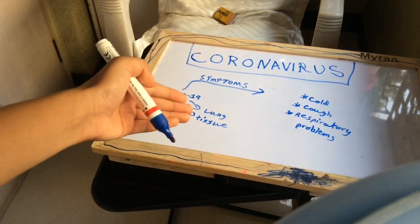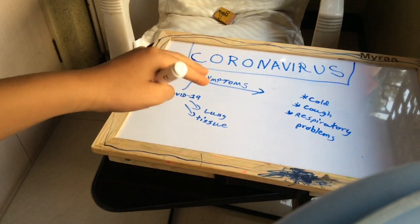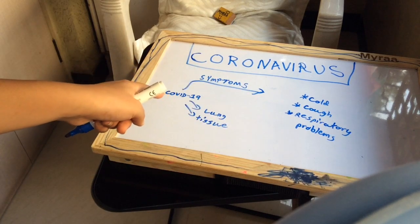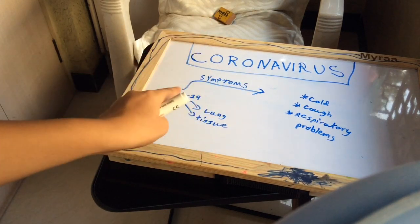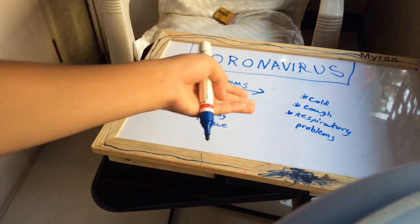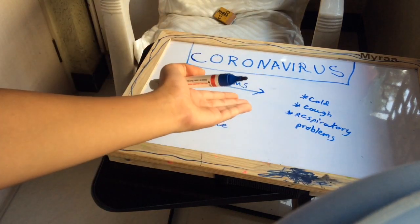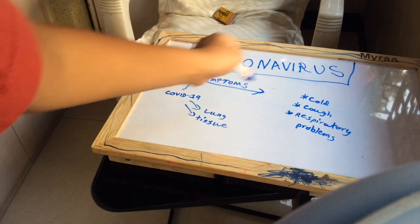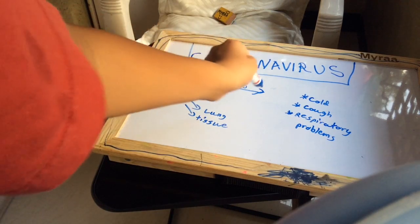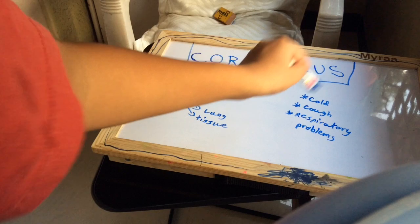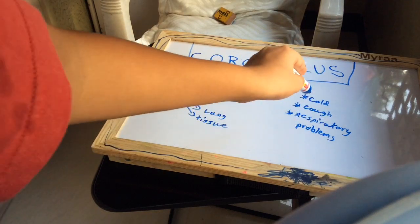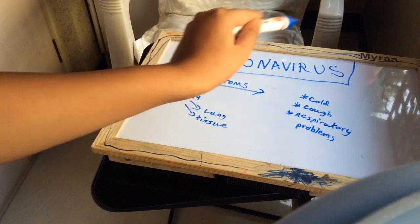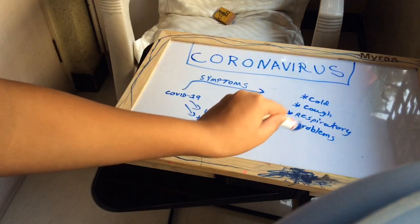After this, your immune cells communicate with your other healthy cells to commit controlled suicide. So now these healthy cells are destroyed due to the virus and your immune cells. Your virus basically orders your immune cells to make your healthy cells commit suicide, which leads to your lung tissue getting dissolved. This causes cold, cough, and respiratory problems.